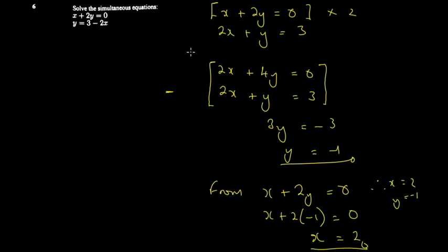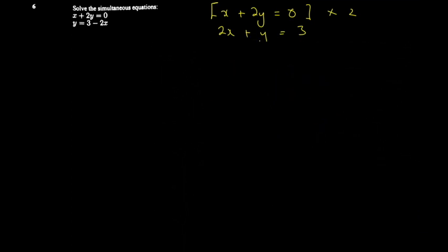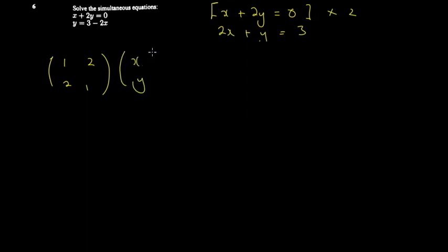We conclude x equals two and y equals negative one — same result as substitution. You can also solve simultaneous equations using matrices or graphical methods. For the matrix method, you write the system as a matrix equation using the coefficients. The coefficients are 1 and 2 for the first row, and 2 and 1 for the second row, multiplied by the column vector x, y, equaling the column vector 0, 3.